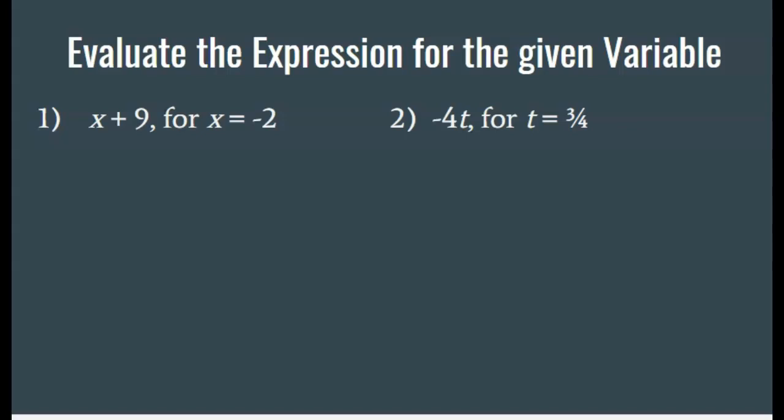It says evaluate the expression for the given variable: x plus 9 for x equals negative 2. Whenever I evaluate an expression, the first thing I need to do is substitute the value for the variable into the expression. So there you see it: I have negative 2 plus 9. Negative 2 plus 9 is going to give me 7. The signs were different, so find the difference and keep the sign of the larger number.